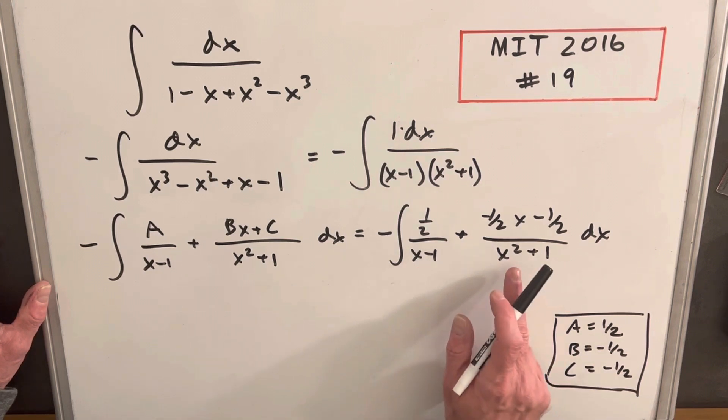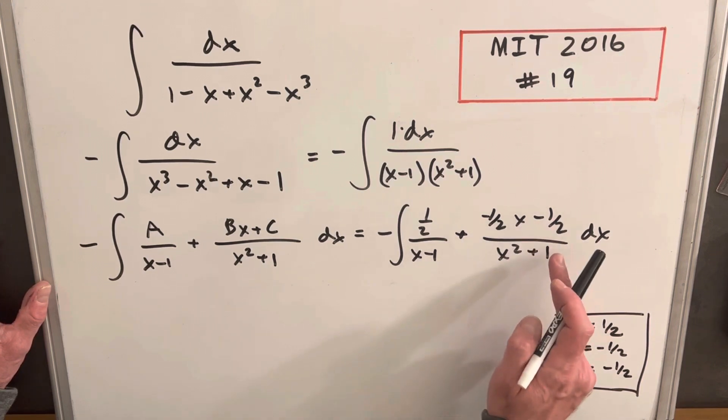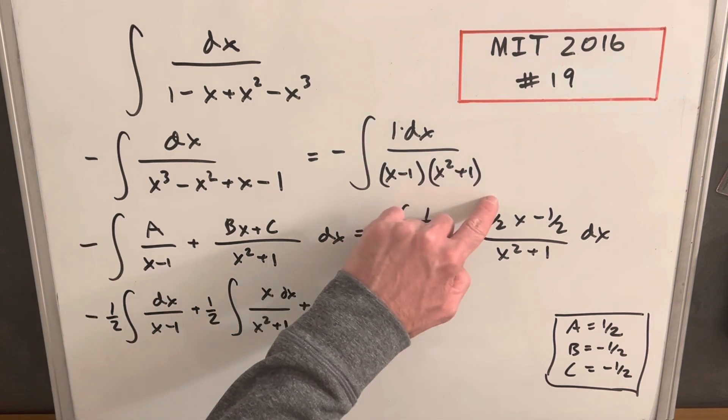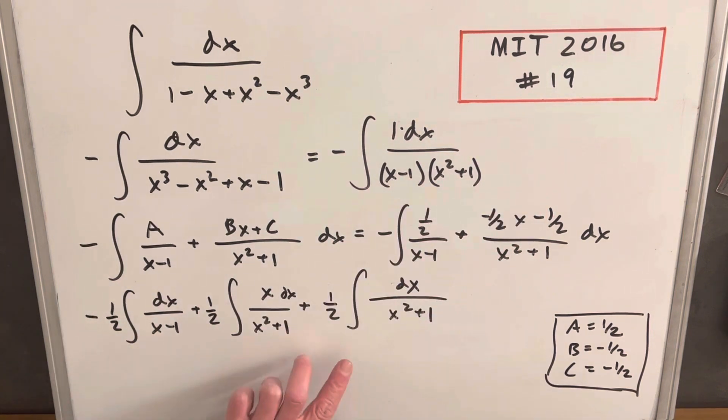We have one integral here. We can split one with our half x. And then we can have the last one with the constant term. Okay, so nothing fancy, pulling out the half. And then I distributed, you see we have plus signs here, because I distributed this minus inside to this minus. So that's why these two terms are positive.